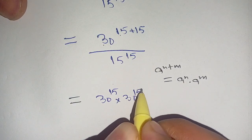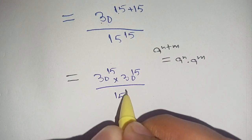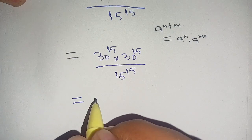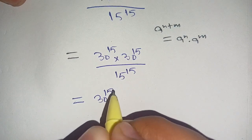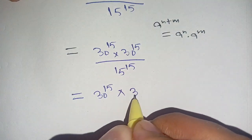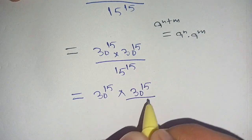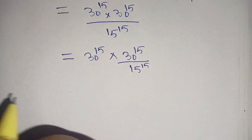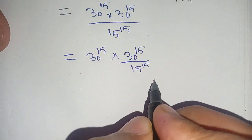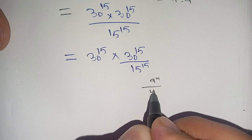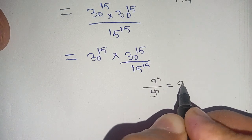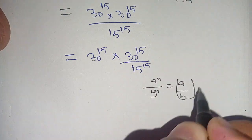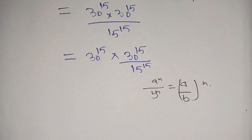Now by using this identity we get 30 power 15 times 30 power 15, divided by 15 power 15. Now in the next step we can write it using the identity: if a power n divided by b power n, it is equal to a divided by b, whole power n.